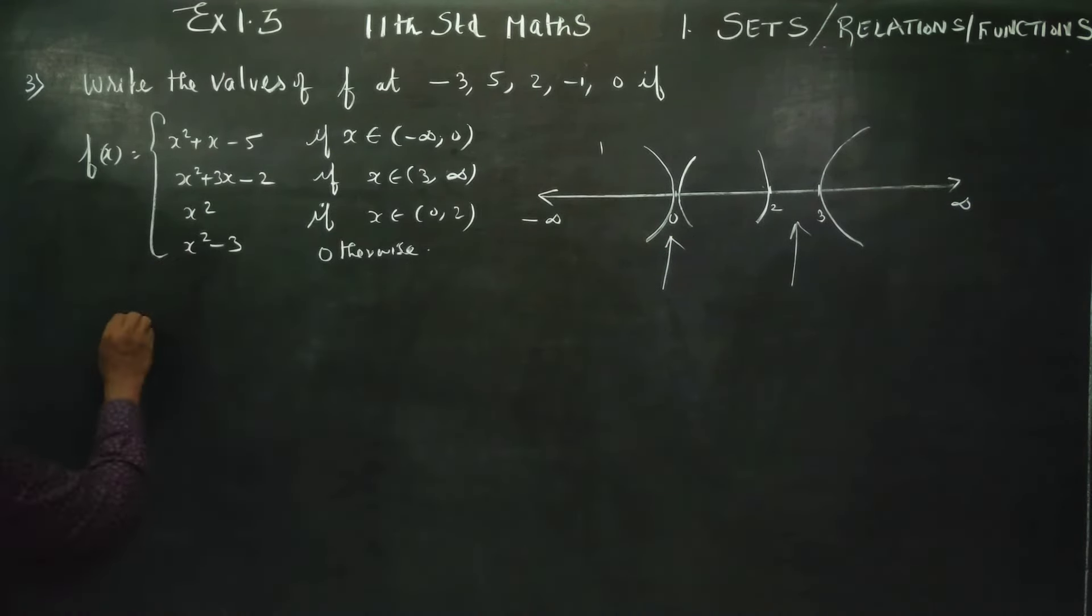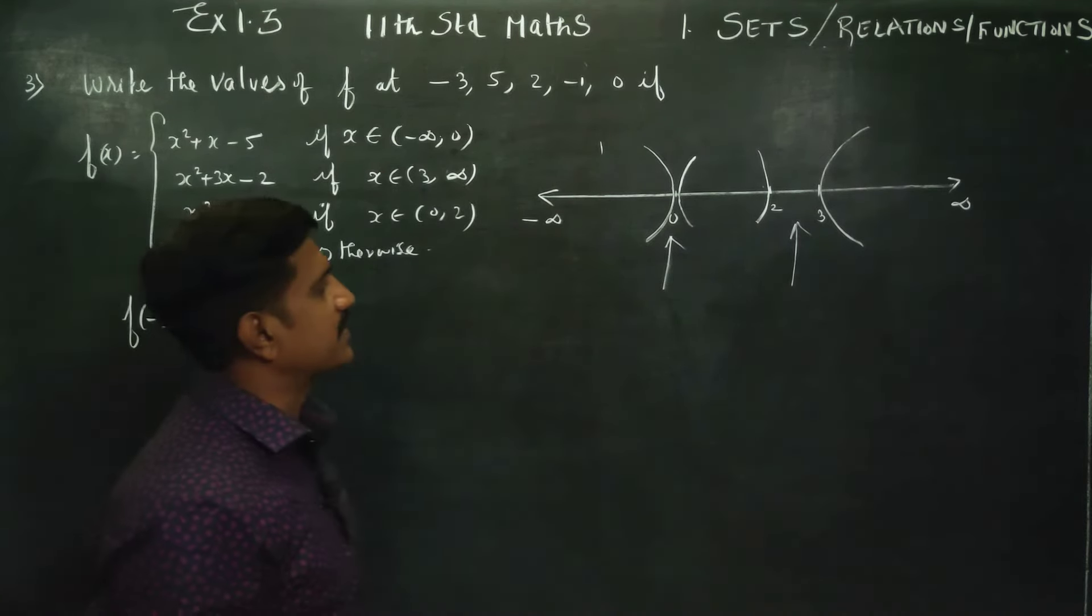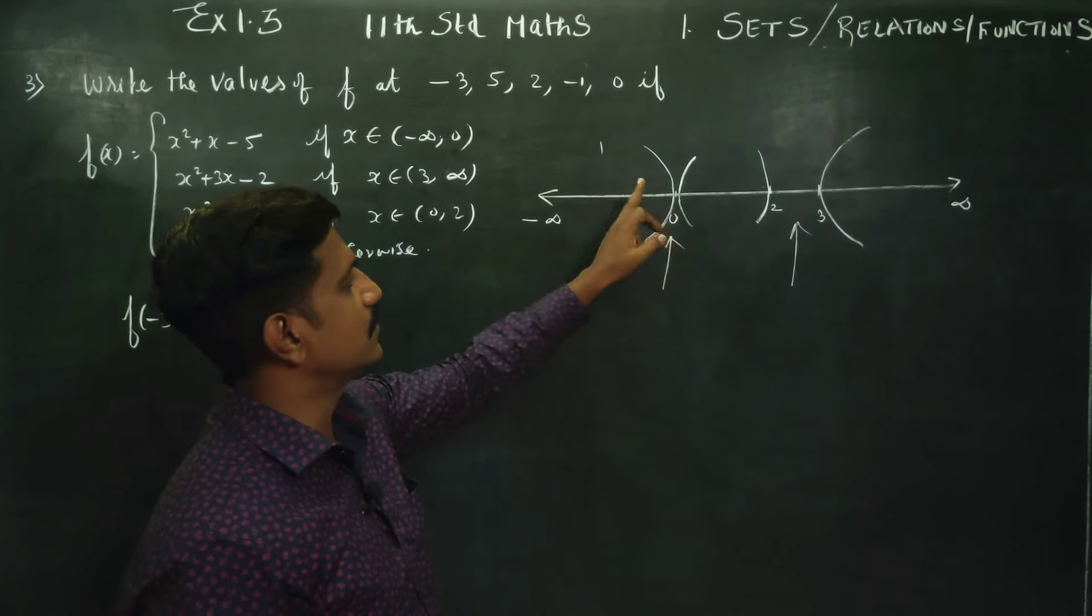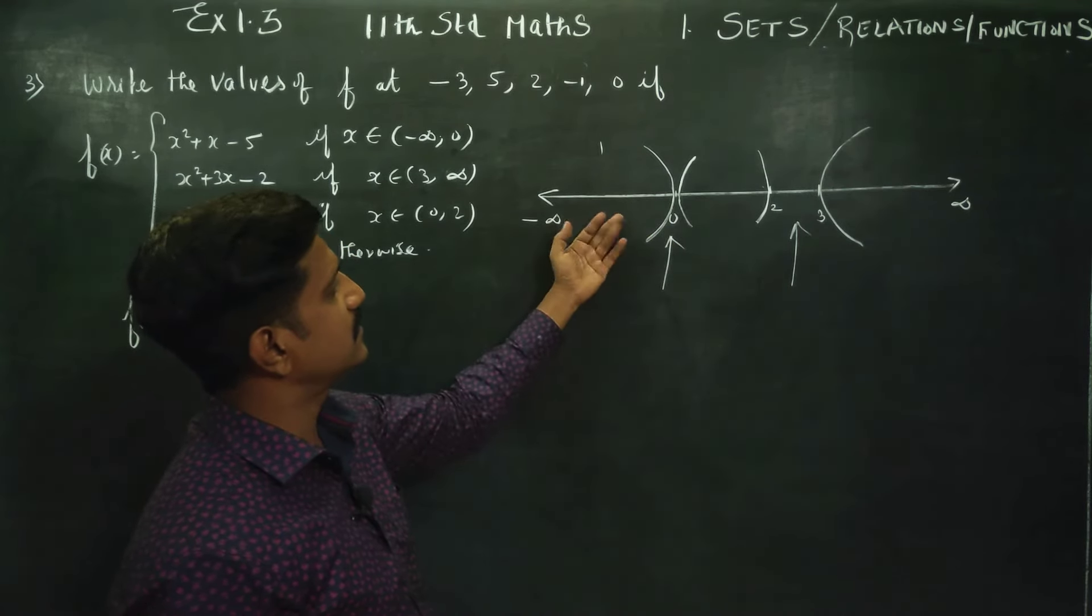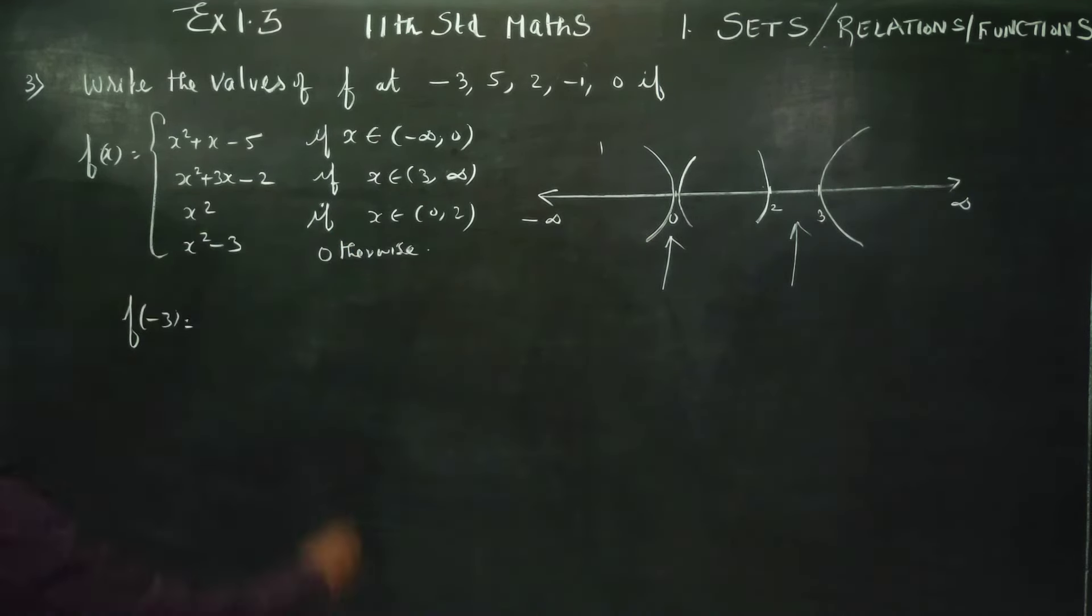First question, f of minus 3. Where is minus 3? Minus 3, minus 3. I am going to say 0, minus 1, minus 2. You have to use function number 1. Minus 3 whole square plus minus 3, minus 5. Minus 3 whole square is 9 plus minus 3, minus 5. 9 minus 8, your answer is 1. This is your first answer.